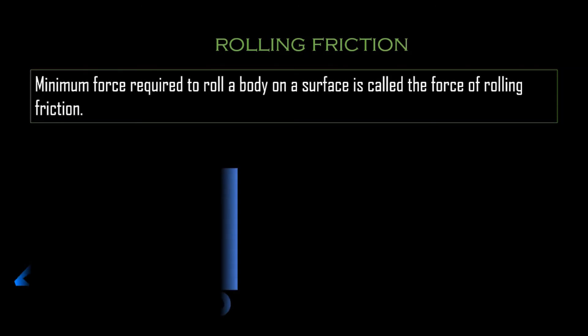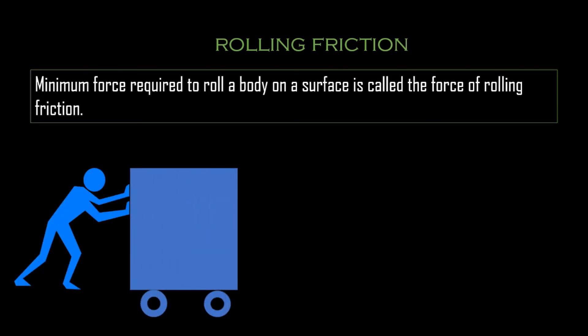If the box is placed on a roller, the friction is drastically reduced. This is called rolling friction. The minimum force required to roll a body on a surface is called rolling friction. Because of wheels, it becomes very easy for us to move a body — this is rolling friction.